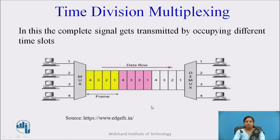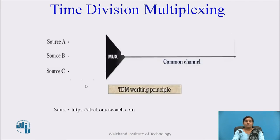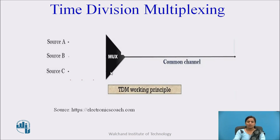In time division multiplexing, the complete signal gets transmitted by occupying different time slots, and the same bandwidth can be used for transmission of a number of signals. For example, suppose there are three sources A, B, and C. If these three sources want to transmit signals over the same communication channel, then the time division multiplexing technique is used.